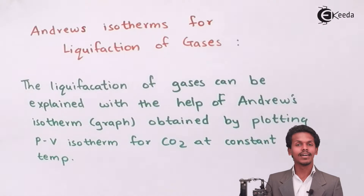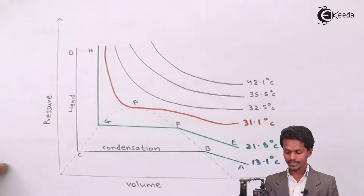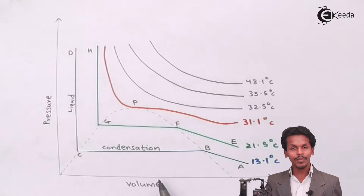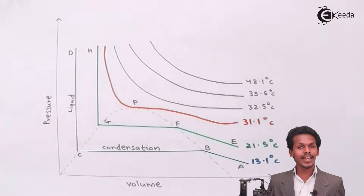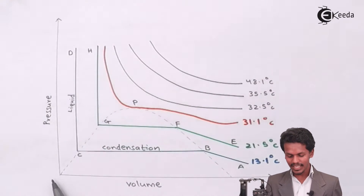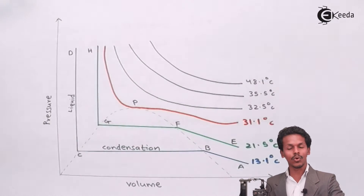Let me explain the isotherm of carbon dioxide. I have drawn a graph which clearly indicates a relationship between pressure and volume, with temperature kept constant. In this graph, the volume will increase on one axis and the pressure will go on increasing on the other, while temperature remains constant throughout.